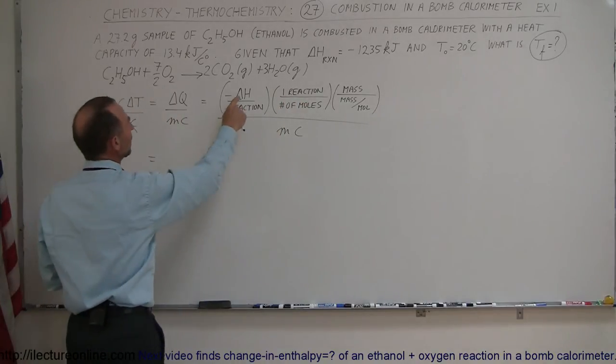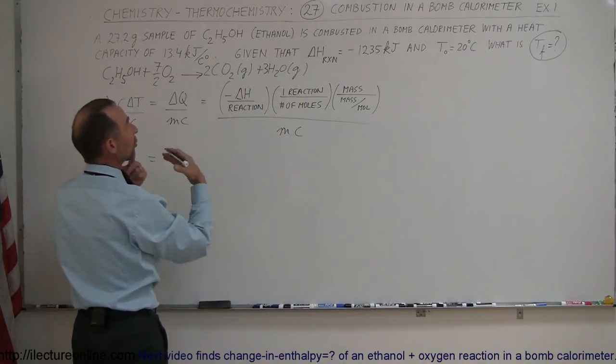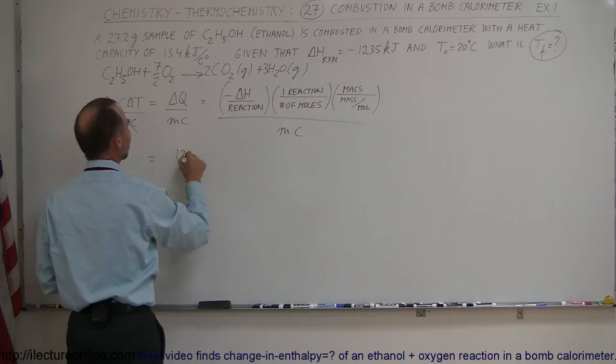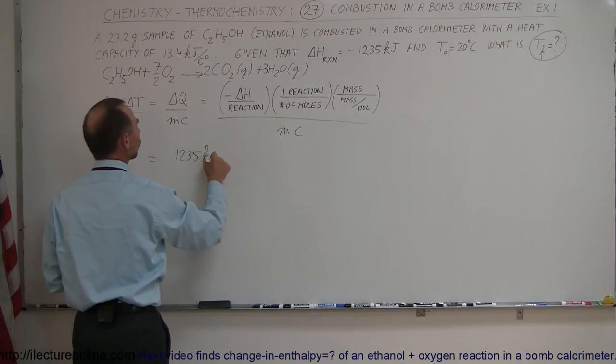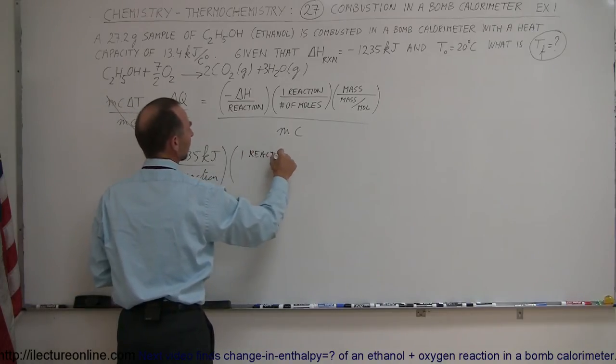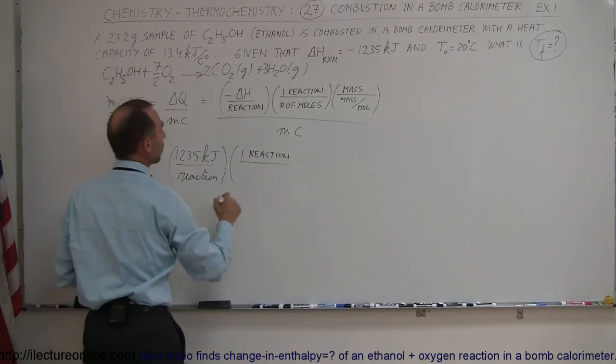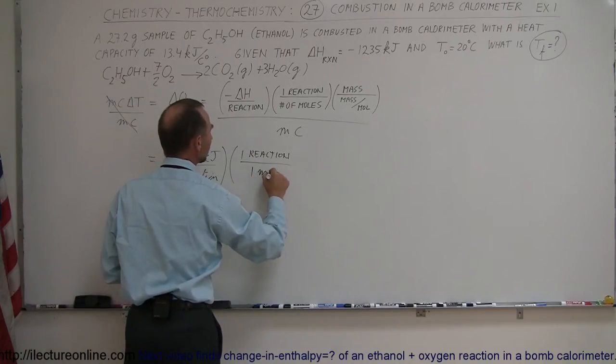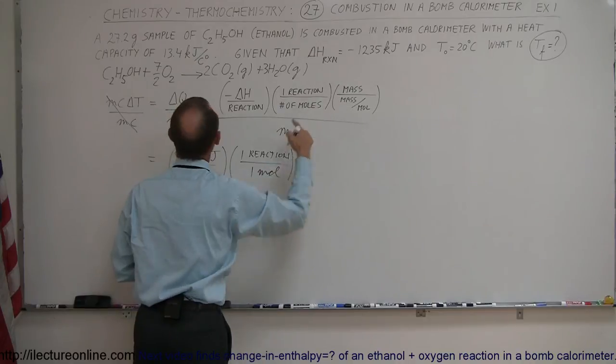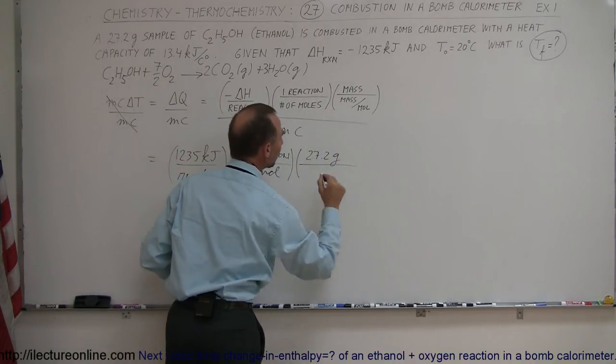Since we don't know how much heat is given off, we're going to use this portion of the equation. This equals the enthalpy change, which we know is 1235 (we put a minus in front to turn into a positive), so we have positive 1235 kilojoules per reaction, multiply it times one reaction divided by the number of moles of the reactant, which is one mole, and then multiply times the mass of the sample, which is 27.2 grams, divided by the molar mass.